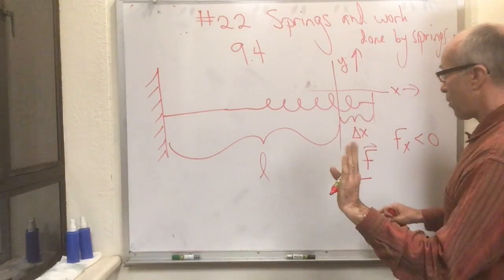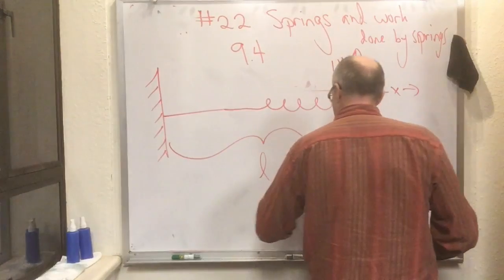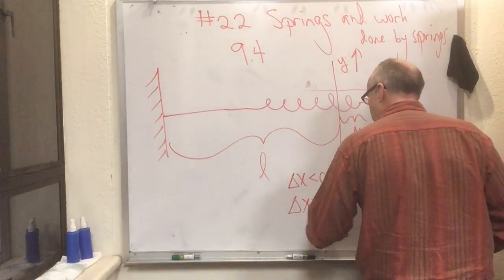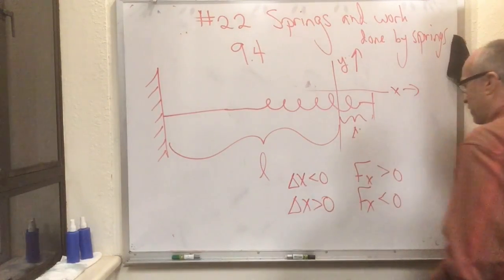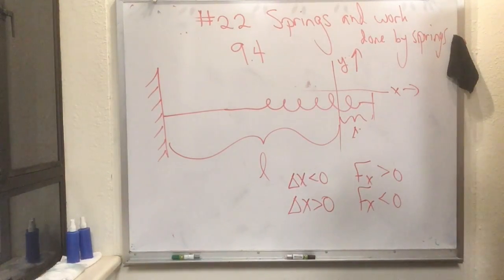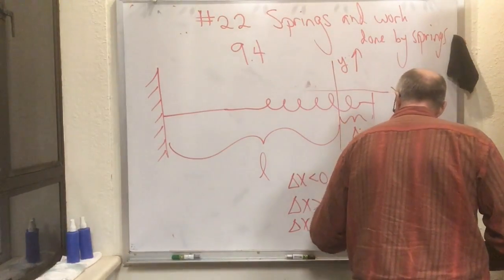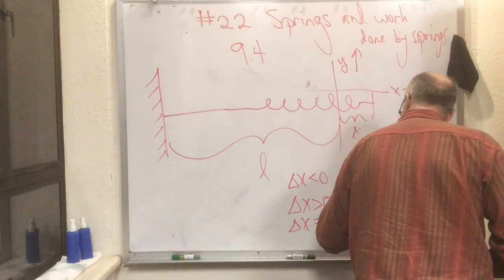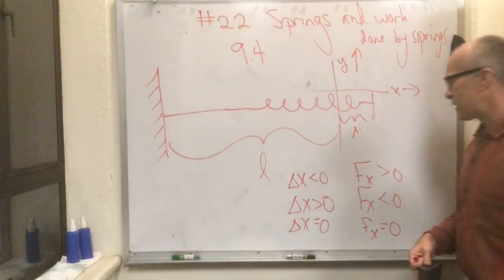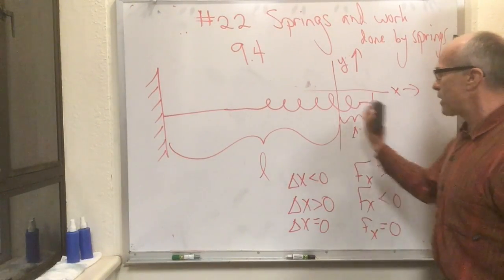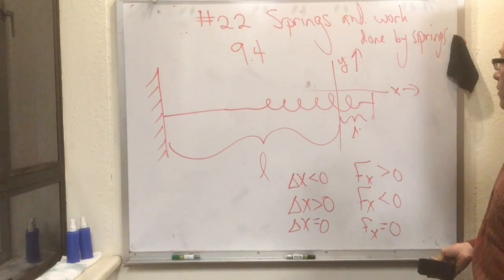To summarize those two situations: when delta x was greater than zero (spring elongated), then Fx was less than zero (pulling left). At the rest position, when delta x equals zero, Fx equals zero. When the spring's at its natural length, it's neither pulling nor pushing on whatever it's attached to.